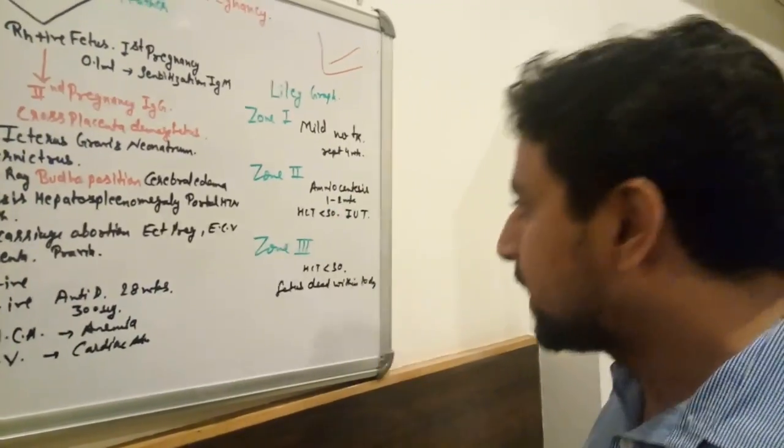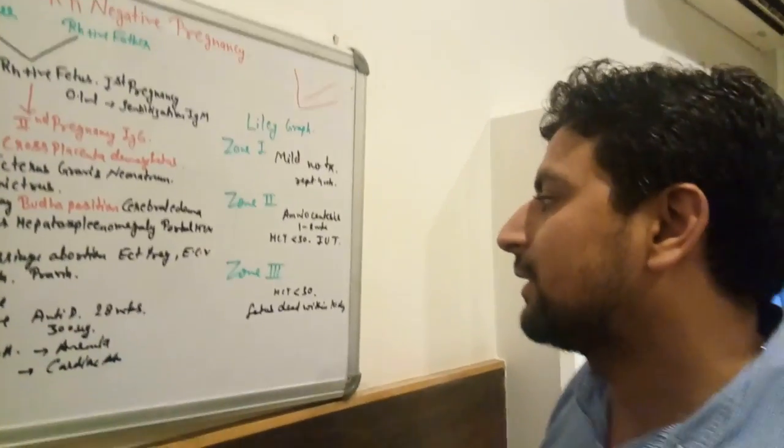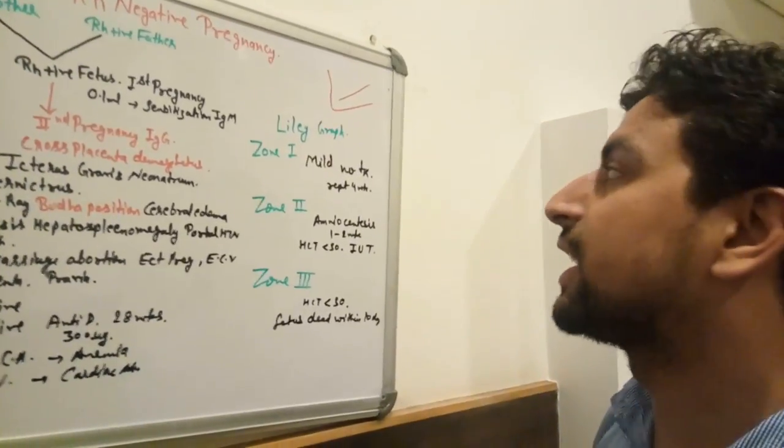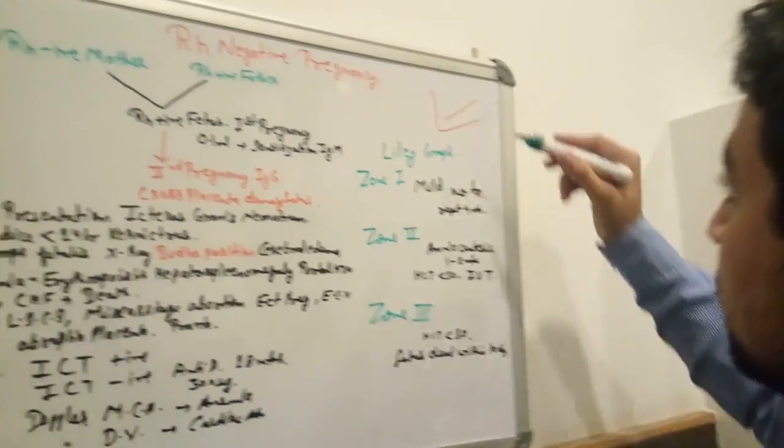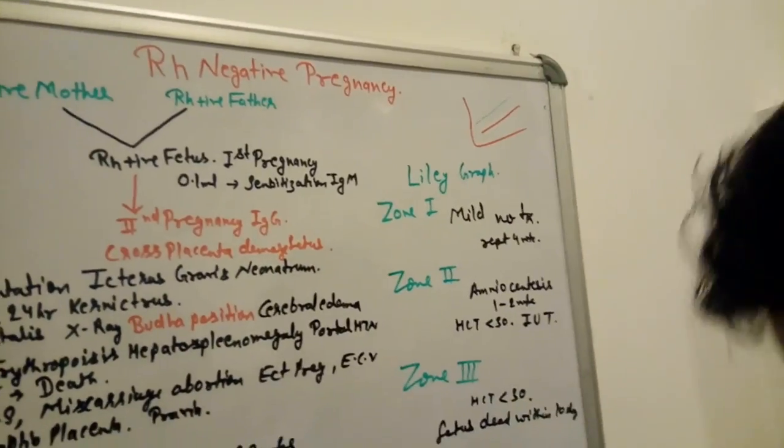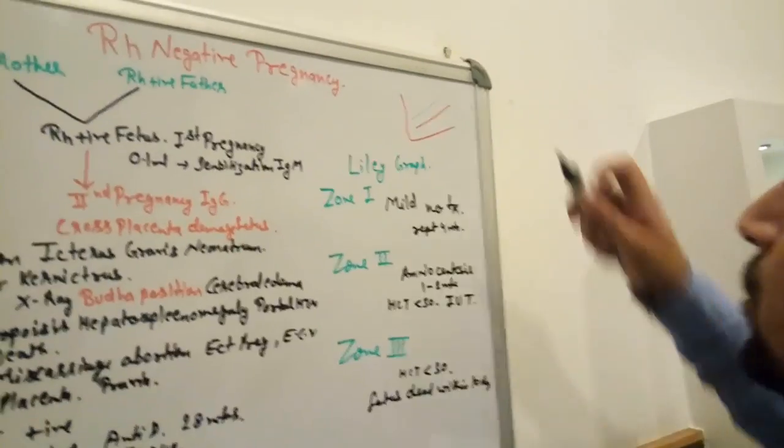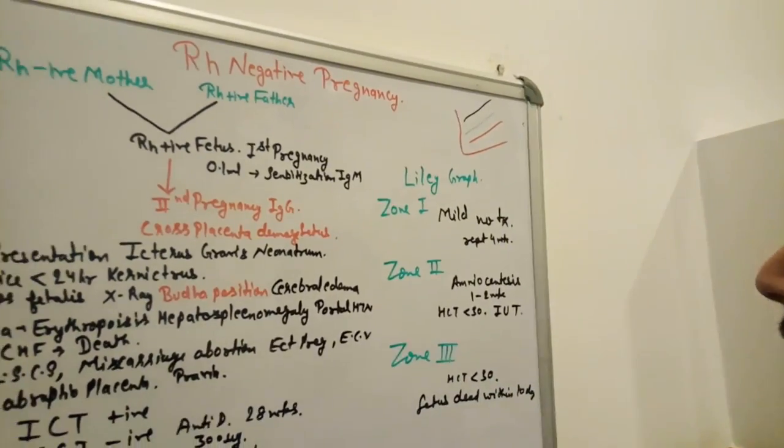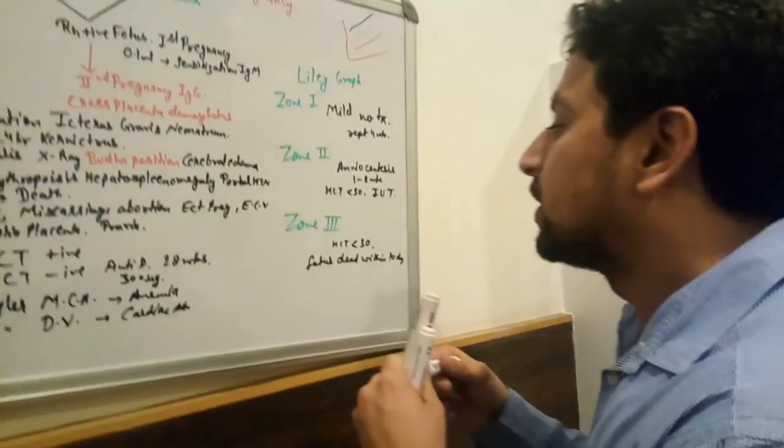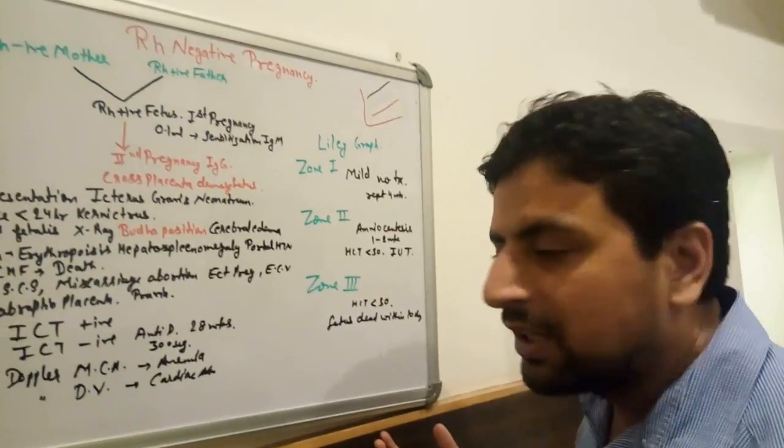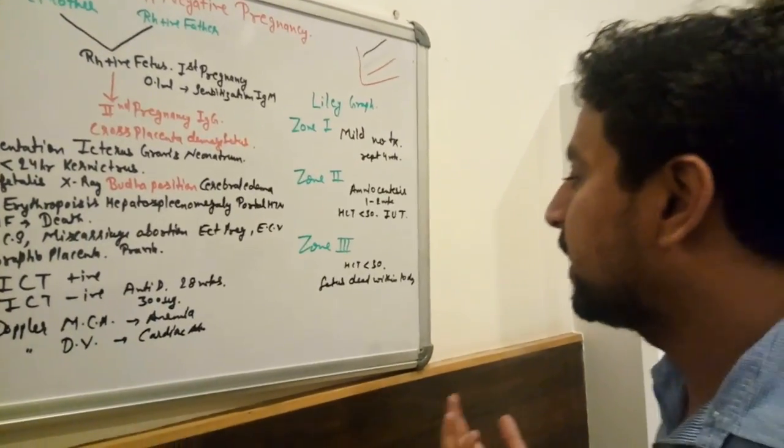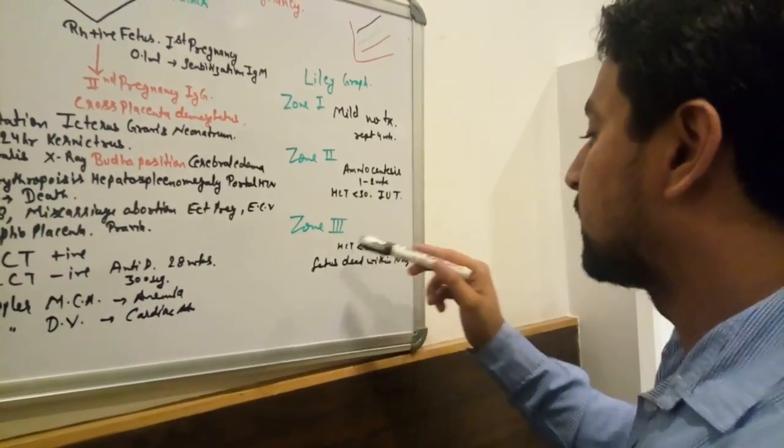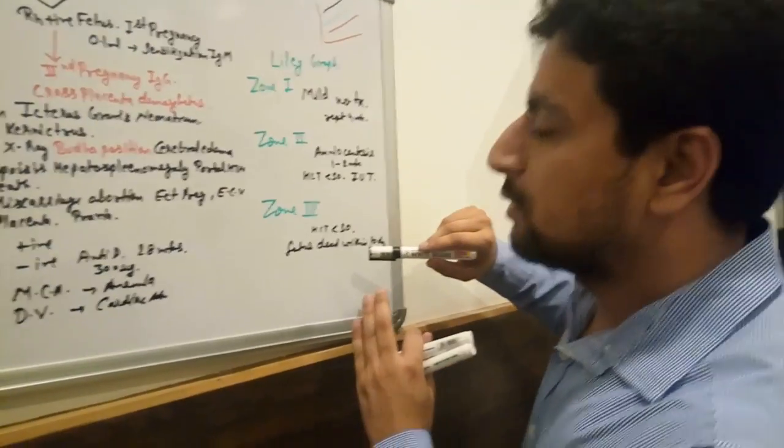In Zone 3 there is severe anemia. This is Zone 2 I already explained, and this one is Zone 3, the danger zone. If we are not going to treat, baby is going to die within the coming 10 days.